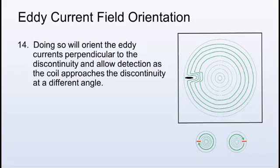Doing so will orient the eddy currents perpendicular to the discontinuity and allow detection as the coil approaches the discontinuity at a different angle.